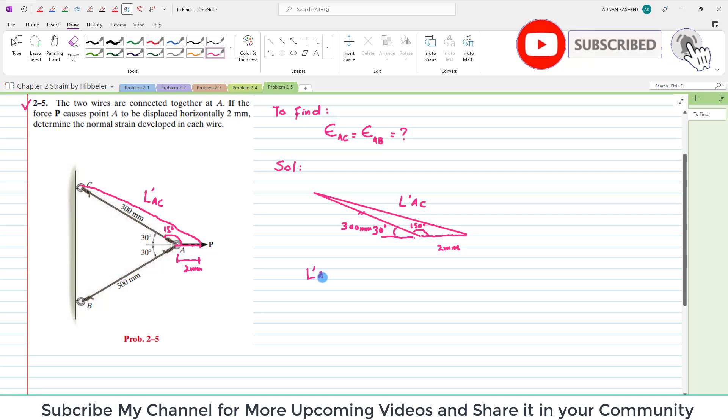Now by using this formula, L dash A C whole square is equal to this length square which is 300 square plus this square 2 mm. Here minus 2 times, 2 times this length multiplied by this length, 300 into 2 into cos of angle between them. So cos of angle between them is cos of 150 degrees. That will be equal to L dash A C square. Clear.